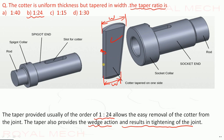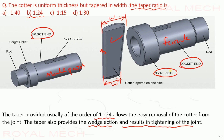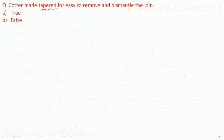The parts of the cotter joint include the socket collar, slot, rod, and spigot collar. The cotter has a taper for easy assembly and dismantling of the joint.